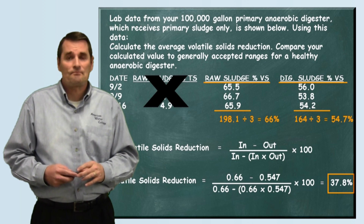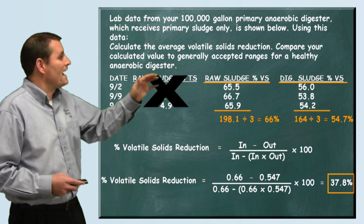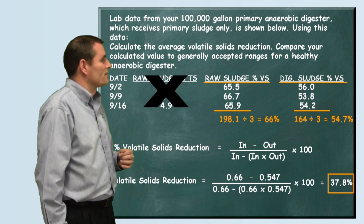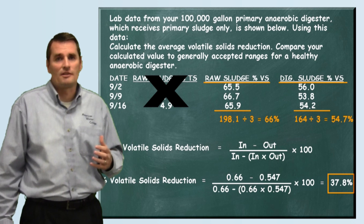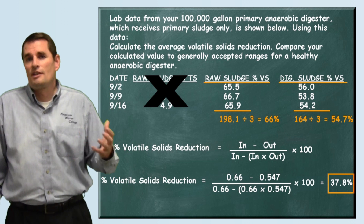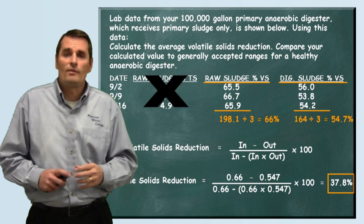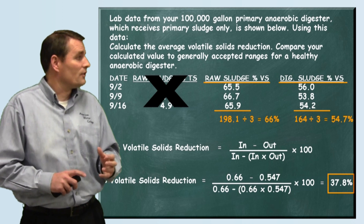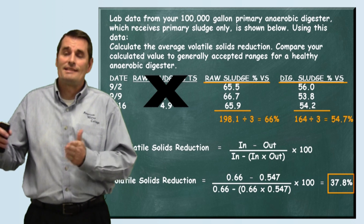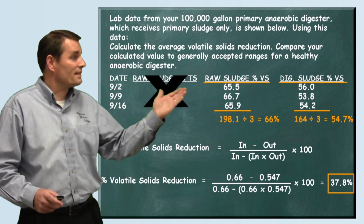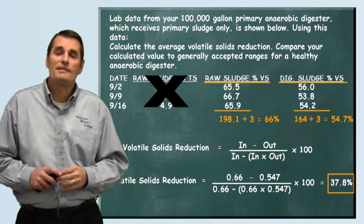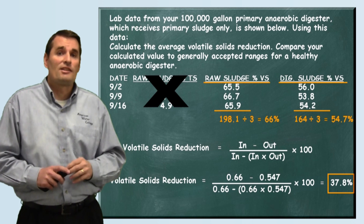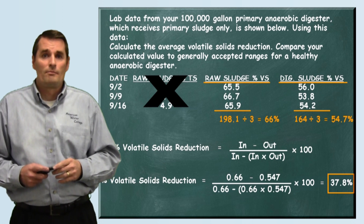Now is that very good? The answer is no. They asked us to compare our calculated value to generally accepted ranges for a healthy anaerobic digester. A healthy, well-operated anaerobic digester should be reducing your volatile solids between 50 to 60%. Since we're only achieving a 37.8% reduction in our volatile solids, this digester is not functioning properly.